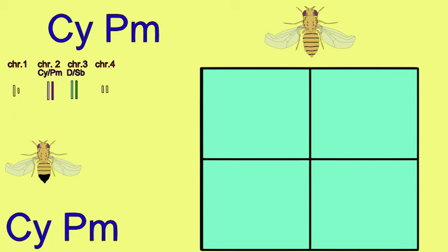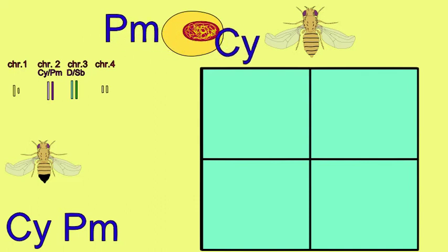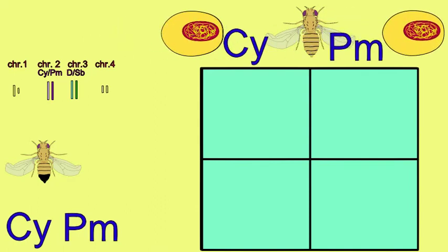This male and female possess the dominant mutation curly on one chromosome 2 and plum on the other chromosome 2. When they make gametes,